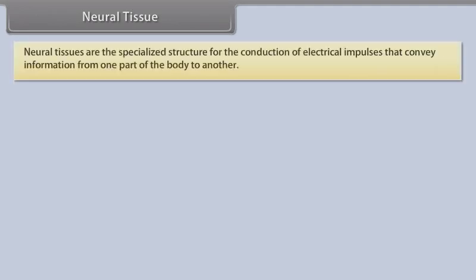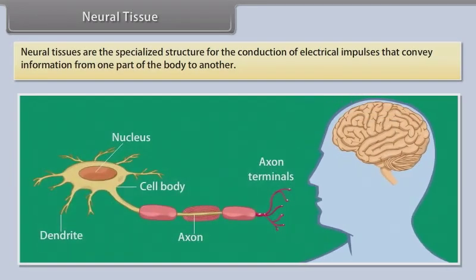Neural tissue. Neural tissues are specialized structures for the conduction of electrical impulses that convey information from one part of the body to another.